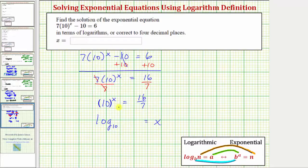And then finally, because the exponential is equal to the number 16/7, we have log base 10 of 16/7 equals x. So notice how by writing the equivalent log equation, we now have an equation that is solved for x.